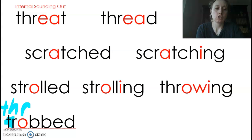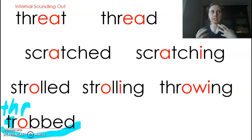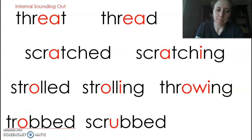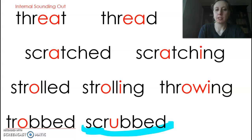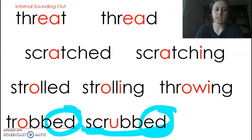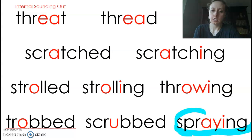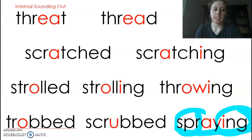3-2-1: Throbbed. So if your heart throbbed, it's like... I think it hurts if your heart's throbbing. 3-2-1: Scrubbed. These are both in the past — ED means it happened in the past. Last one: 3-2-1: Spraying. S-P-R says 'spur,' and ING means it's happening right now.